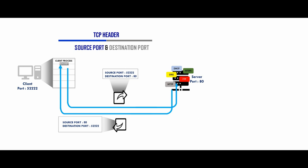The combination of an IP address and a port number is like going to a specific device and accessing a specific service on it — just like going to a building and then going to a specific apartment inside that building.